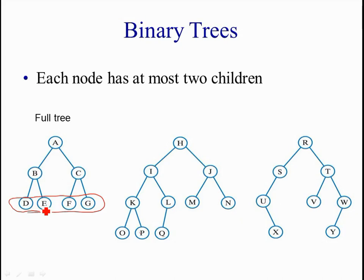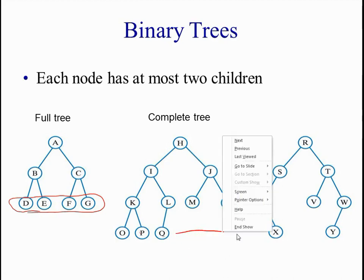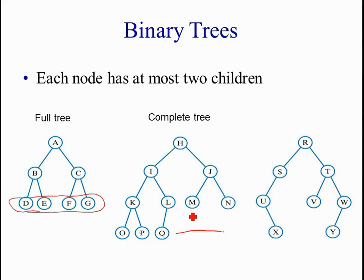The second example — the second tree — we call it a complete tree. It's like a full tree, but only in the last level the tree has some nodes missing. Some definitions restrict that these missing nodes must be from the right side, not from the left side and without any gaps. For example, if P is not there and we have O and Q, the leaves are only on the last level but there is a gap in between, so we don't call it a complete tree.